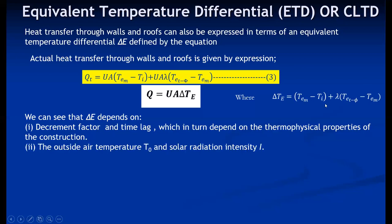Delta T also depends on the outside air temperature and solar radiation intensity, since T_t depends on outside air temperature, absorptivity of the material, solar radiation intensity, and the outside film coefficient.